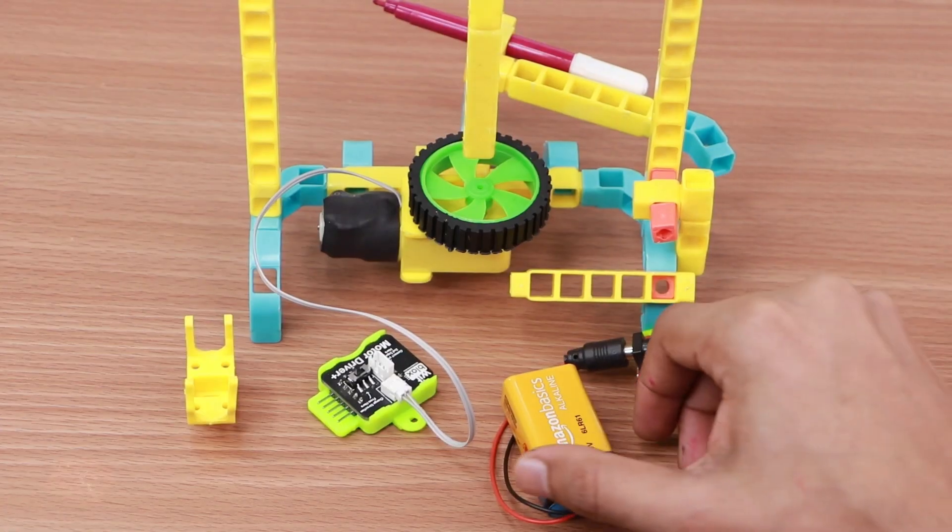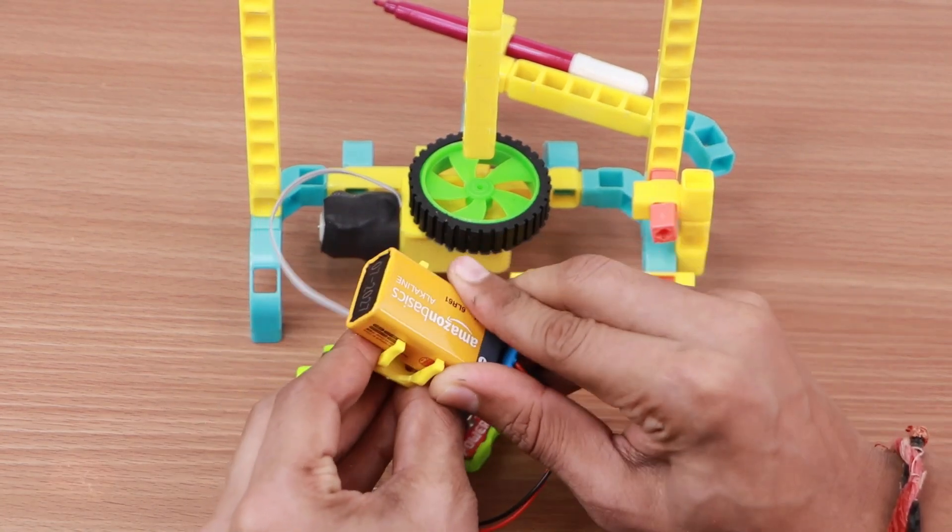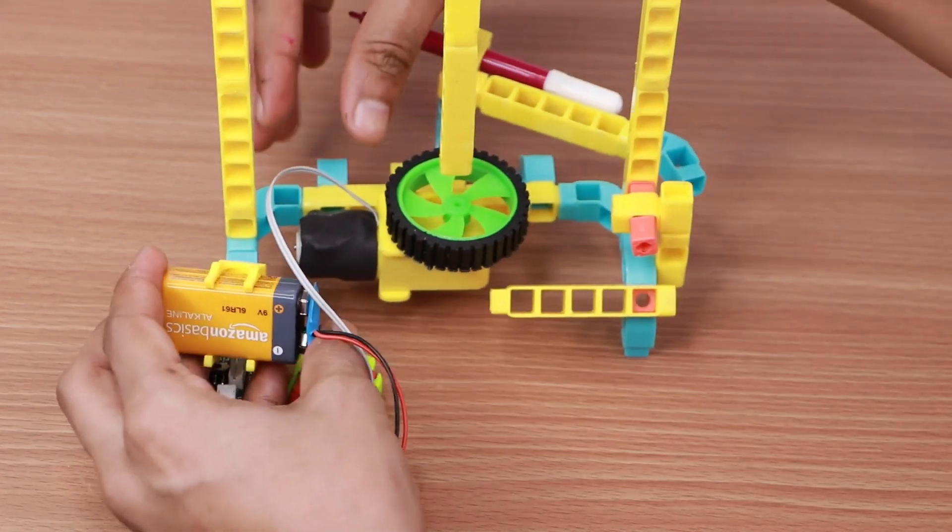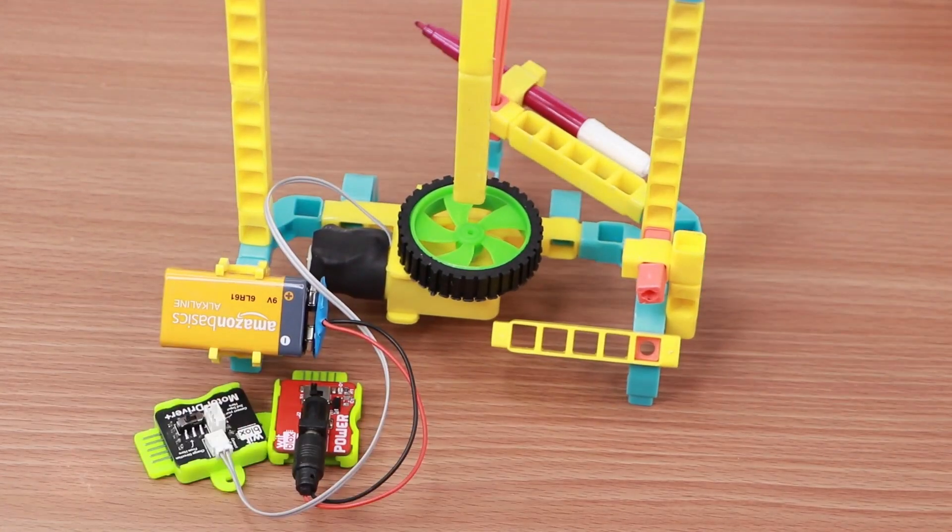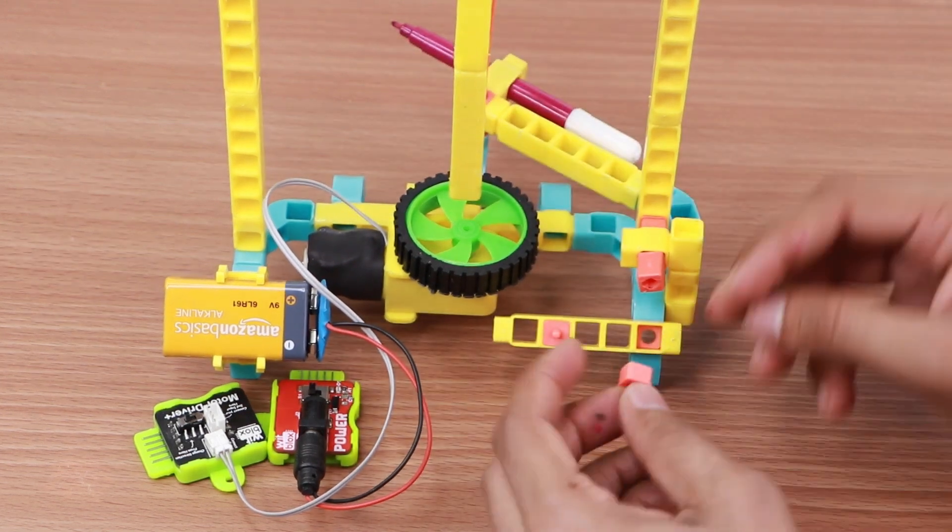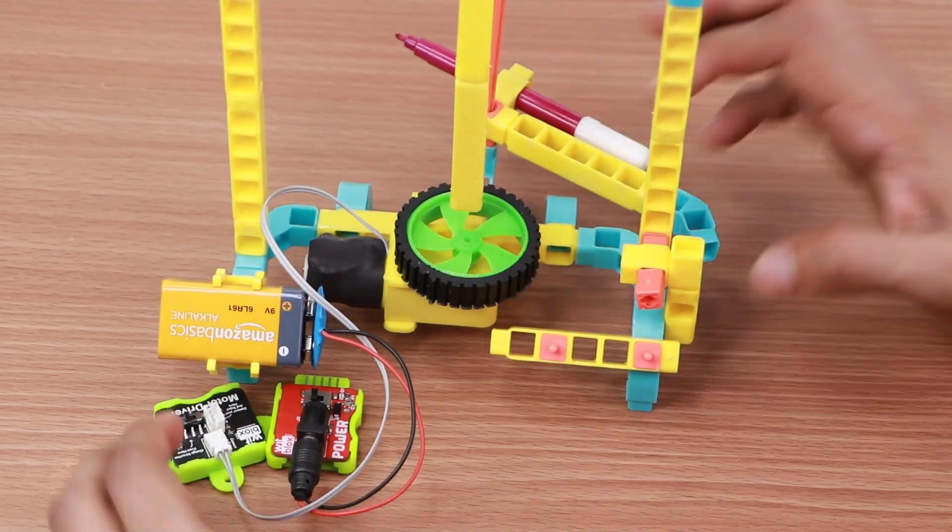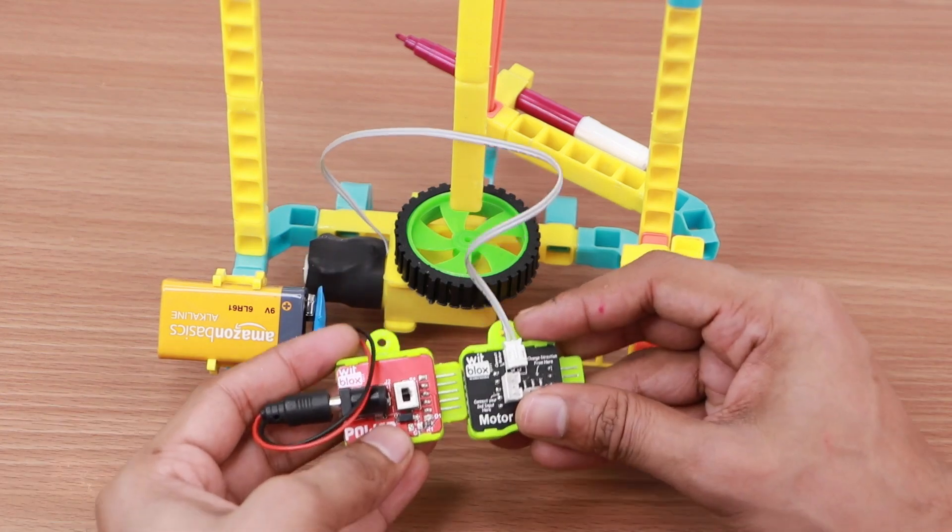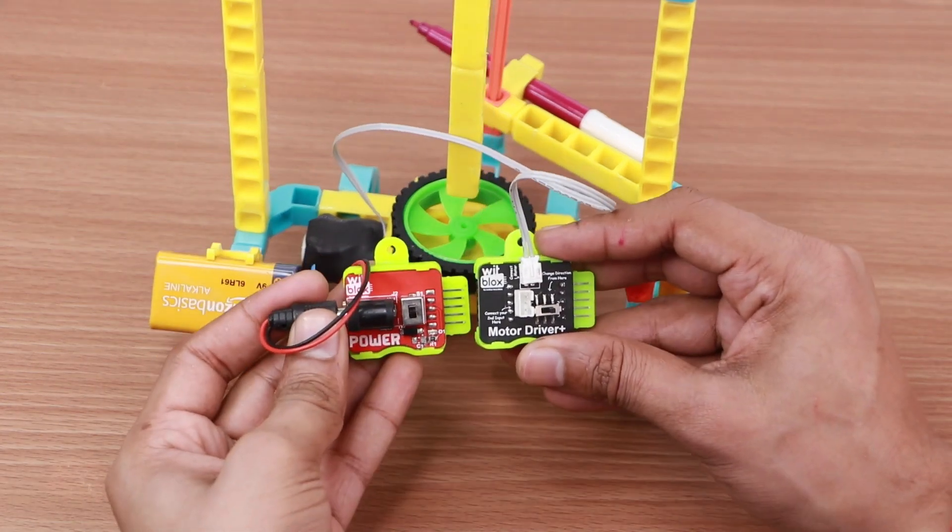Now is the time to build the logic of the circuit. First, take the battery connected to the power blocks and attach it to the battery holder. Connect the holder to the base. Connect two blocks holders on the base. Join power blocks and motor driver blocks and connect it over the blocks holders.